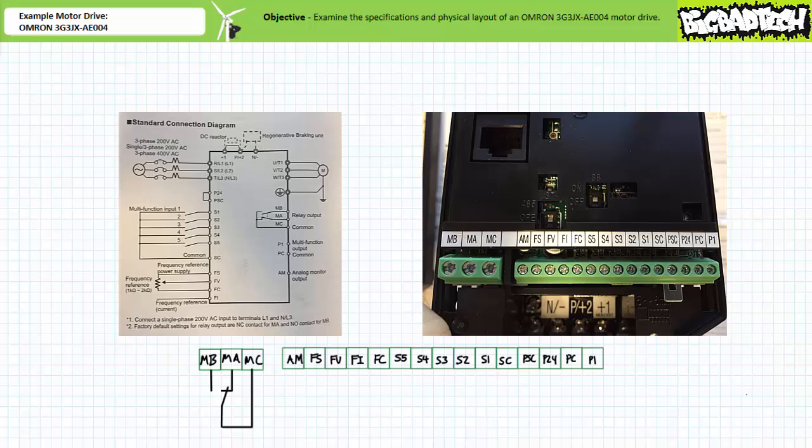How different is this commercially available motor drive from the generic block diagram I used in the Introduction to Motor Drives lecture? Not much. Similarities include primary three-phase AC inputs and outputs, manual operators, a communication port, and the inclusion of accessory multi-function digital and analog inputs and outputs.